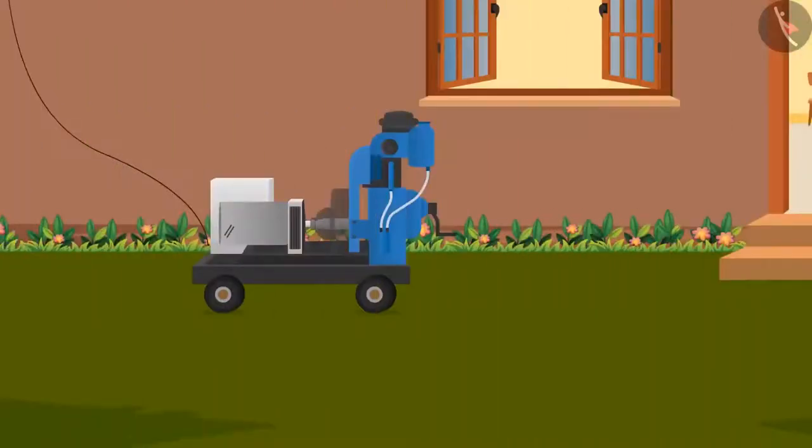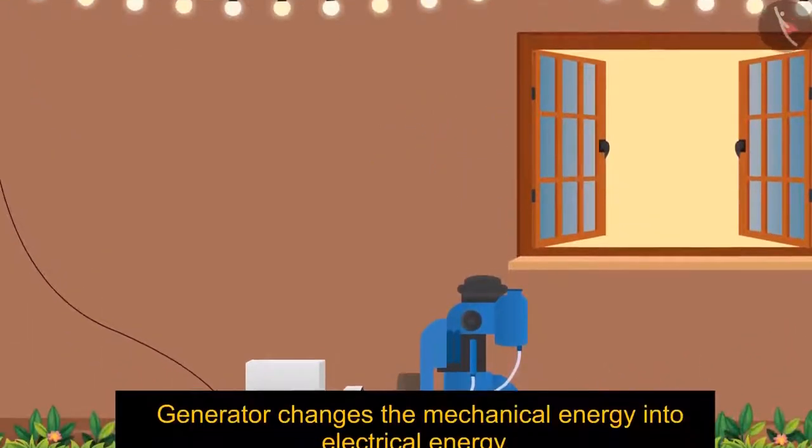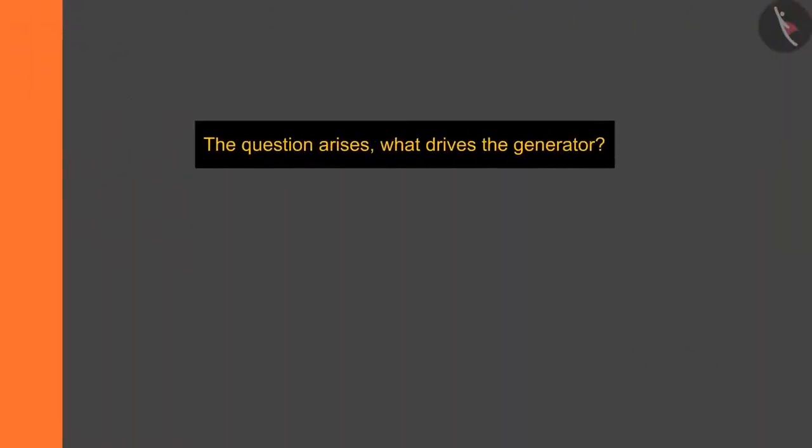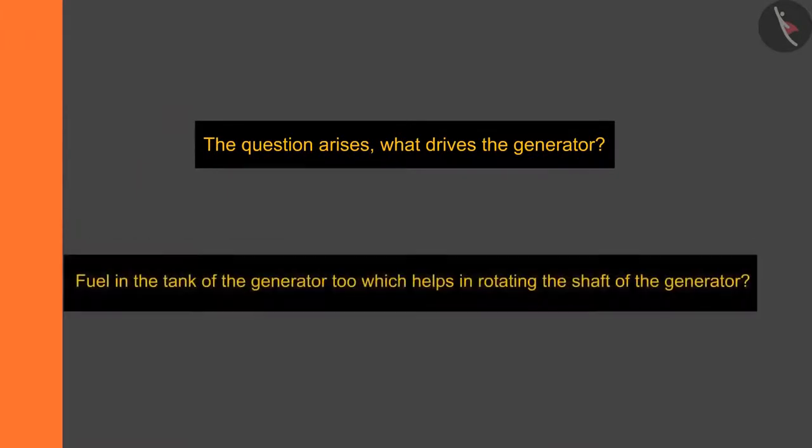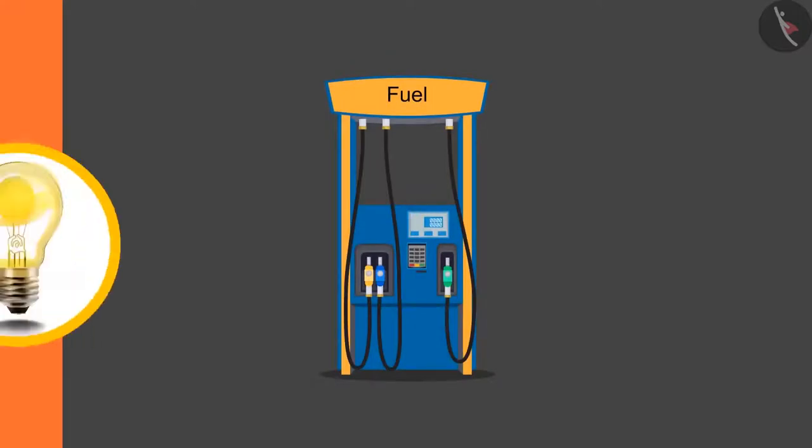As we have seen in previous videos, electric generators generate electricity by changing mechanical energy into electrical energy. Now the question arises, what drives the generator? Do we put fuel in the tank of the generator too which helps in rotating the shaft of the generator?